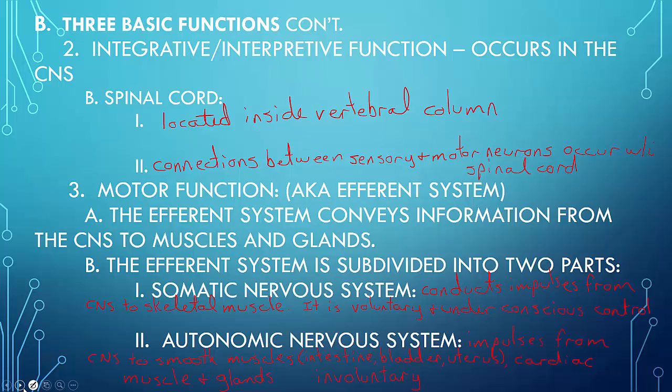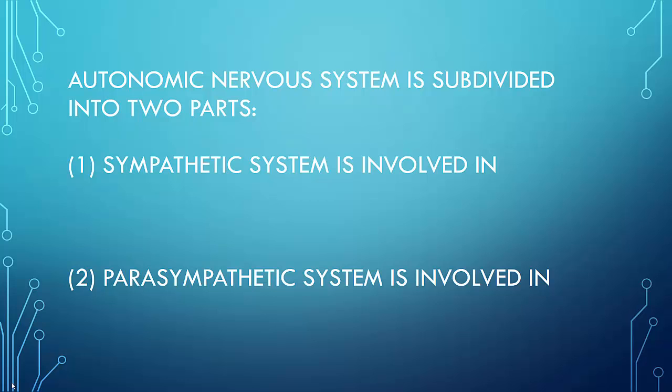The autonomic nervous system is subdivided into two parts as well. First is the sympathetic system. The sympathetic system is involved in what we call the fight or flight, resulting in sharpened awareness and excitement. And the excitement can be caused by danger.